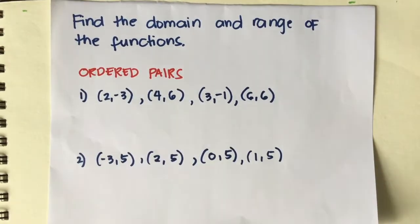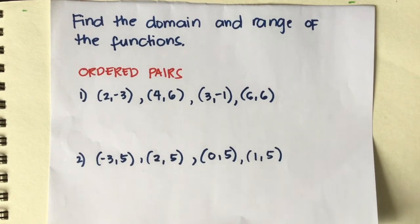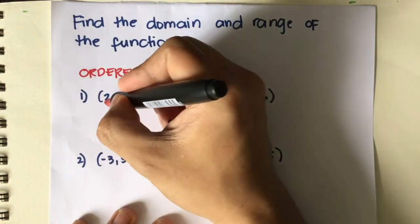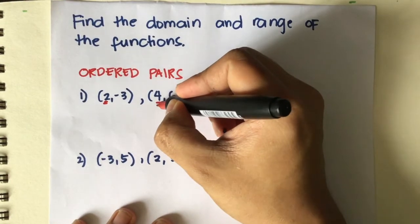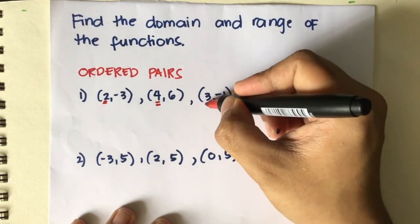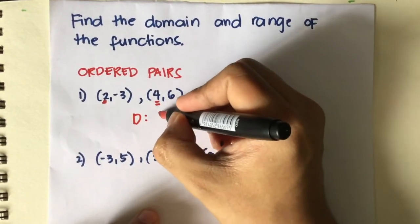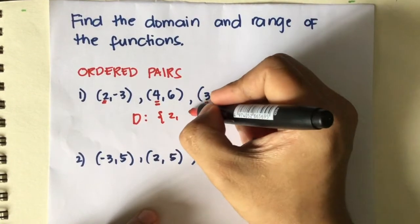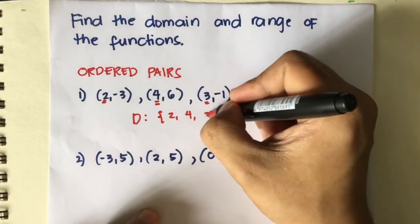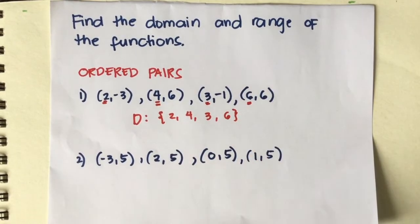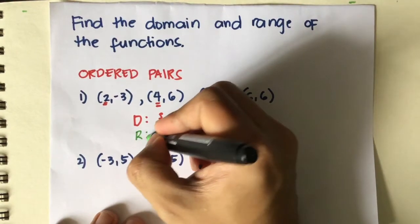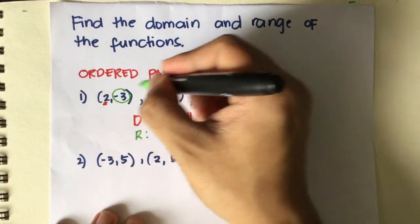Let's take example number one. We're using ordered pairs to find the domain and range of a function. Using ordered pairs it's easy because we determine the values of x and the values of y. The values of x here are positive 2, 3, 4, and 6, so our domain will be {2, 3, 4, 6}. In the range, you just have to focus on the values of y.